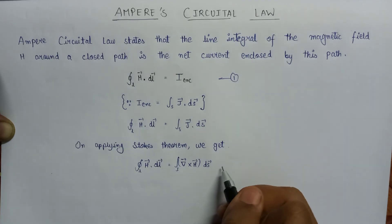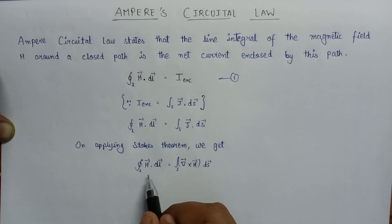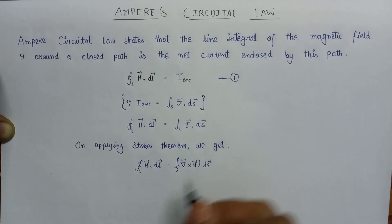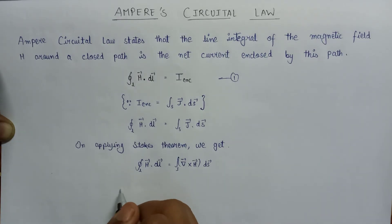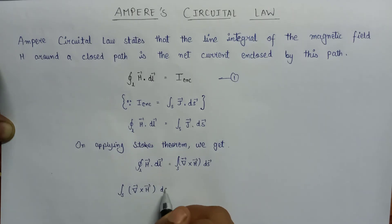Now substituting this value after the Stokes theorem in this equation, integration over surface del cross H vector dS equals integration over surface J dot dS.